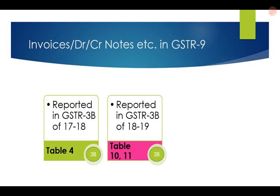In a simple case where all information has been given in GSTR1 and GSTR3B for 2017-18, this information will be given in GSTR9 in Table 4, and the tax has been paid through 3B. Then, some outward supplies which could not be shown in 2017-18 returns were shown in 2018-19 returns — and again the tax has been paid through GSTR3B of 2018-19 — and these will be shown in Table 10 and 11 of GSTR9.